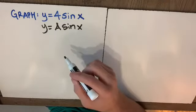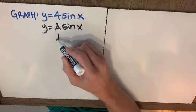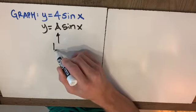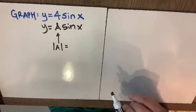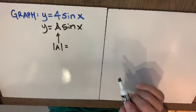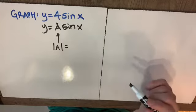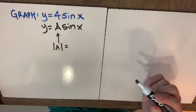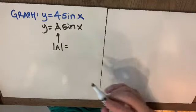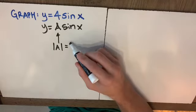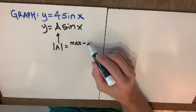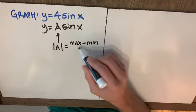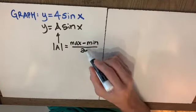A is our amplitude and we're going to put a for amplitude in absolute value because like the hypotenuse and like a reference angle the amplitude is always reported as positive. So the amplitude is found by taking the maximum function value subtracting the minimum function value and dividing by two.